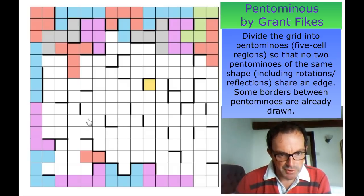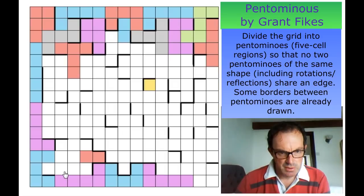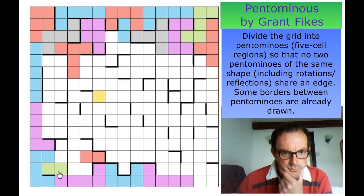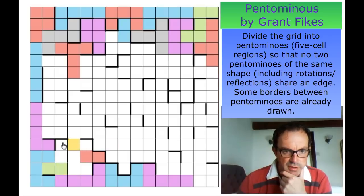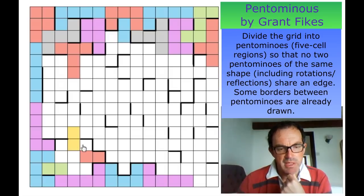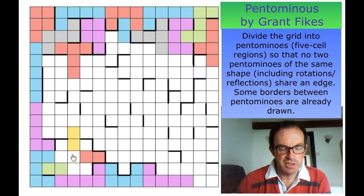One trick you can sometimes do with pentomino puzzles is to look at cul-de-sacs like this. Those two have got to be part of the same pentomino. If we look at this region down here, we've got in effect an 11-cell region populated by those highlighted cells. There's only one entrance into this region — this entrance is the only way of getting into it.